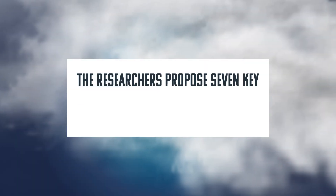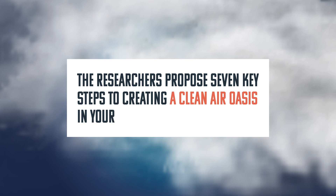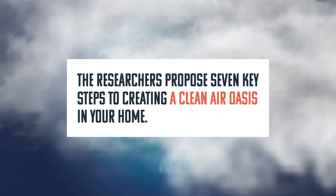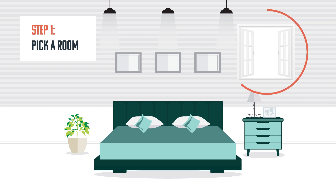The researchers propose seven key steps to creating a clean air oasis in your home. Step one: pick a room. This should be the room in which you spend most of your time — for many people, this is the bedroom. While you should bring in clean air wherever possible, such as by opening windows, you should avoid doing this when pollen, humidity, or pollution levels are high.